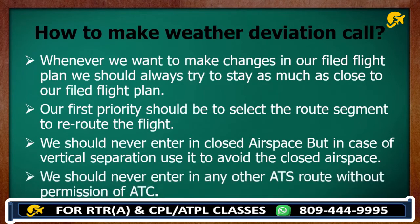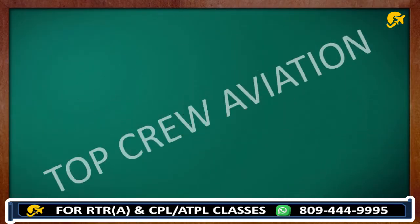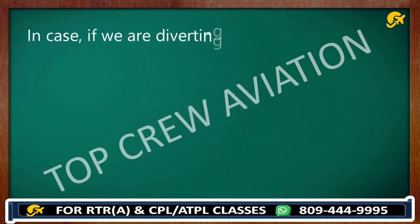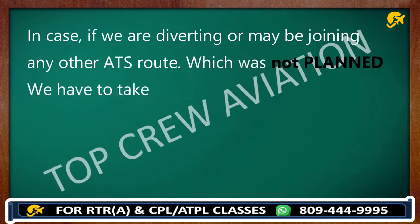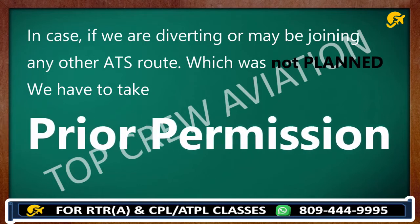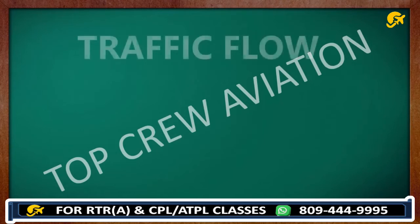The next point is we should never enter any other ATS route without permission from ATC. For example, if we are flying from Delhi to Mumbai, we are in touch with ATCs along that planned route. If we need to divert or join another ATS route that was not planned, we must take prior permission.